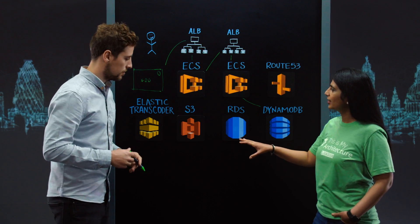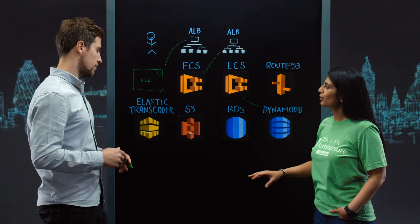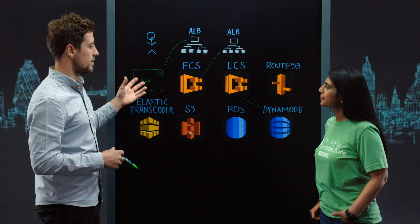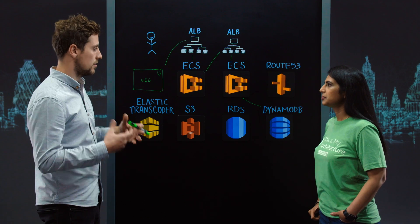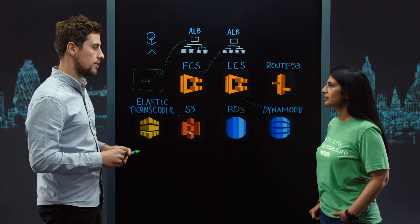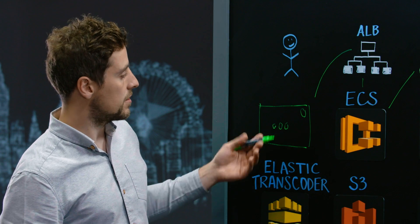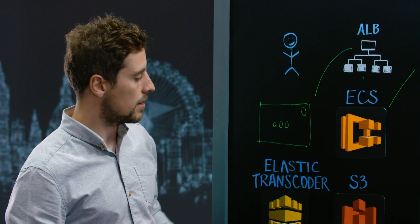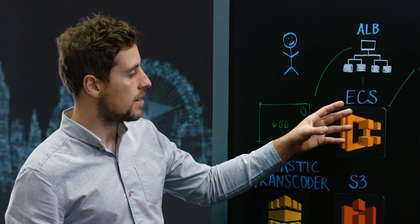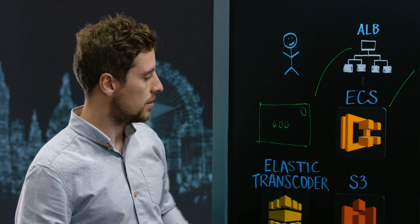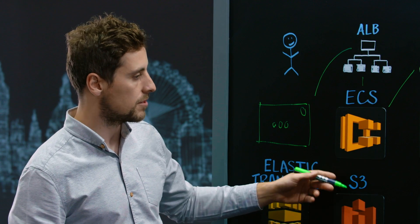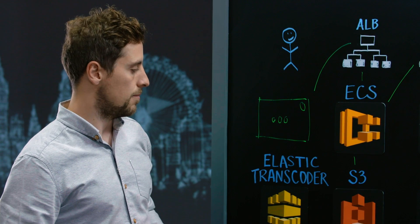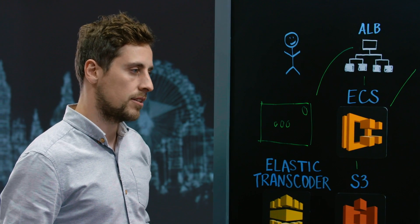I see you're using S3 here — what sort of data is getting stored there? Most of it is the assets that the creators upload, so the content we're creating for the clients. The process is through the public ALB to one of the Golang APIs. They may go and get some data from the private APIs and use that to generate some paths for uploading the actual content to S3. That's where we store all of our content.